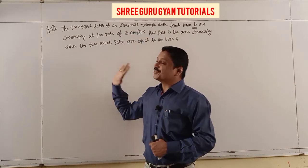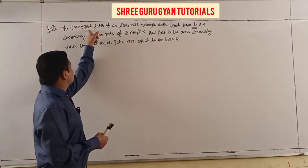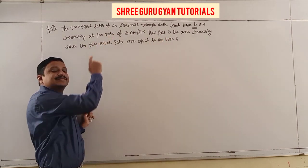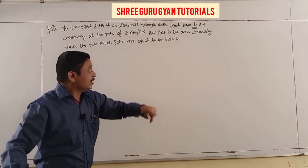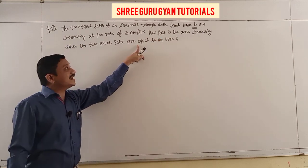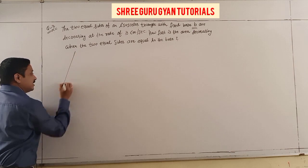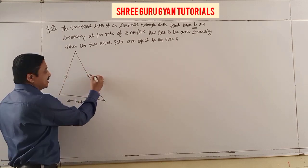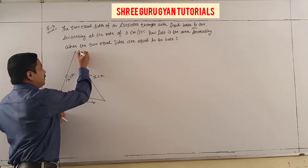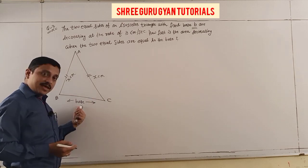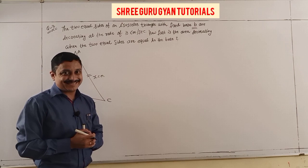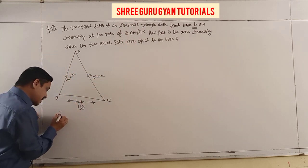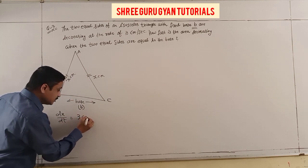Now continuing with one more numerical — Question 3, which is also exam oriented. The two equal sides of an isosceles triangle with fixed base b (a constant) are decreasing at 3 cm per second. How fast is the area decreasing when the equal sides equal the base? Let the equal sides be x cm, and the base be b.